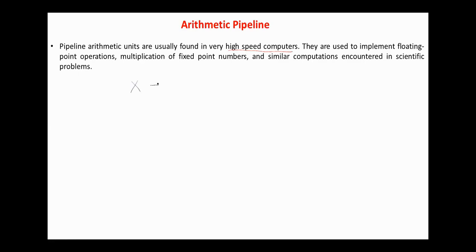The general form of a floating-point number is x equals A multiplied by r to the power of small a, where capital A is called the mantissa, r is the base or radix of the numbering system, decimal 10 or binary 2, and small a is the exponent.